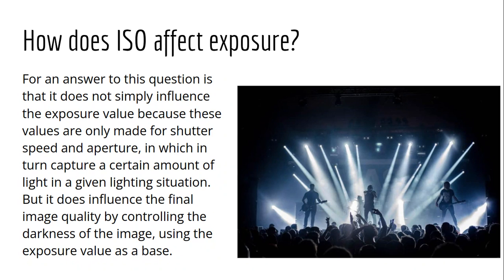That is what happens in this concert image — you can see the light is controlled. ISO does affect some aspects of exposure, and the reason it does is because of the amount of image noise or background noise — otherwise the image would be grainy and you can't see much of it.